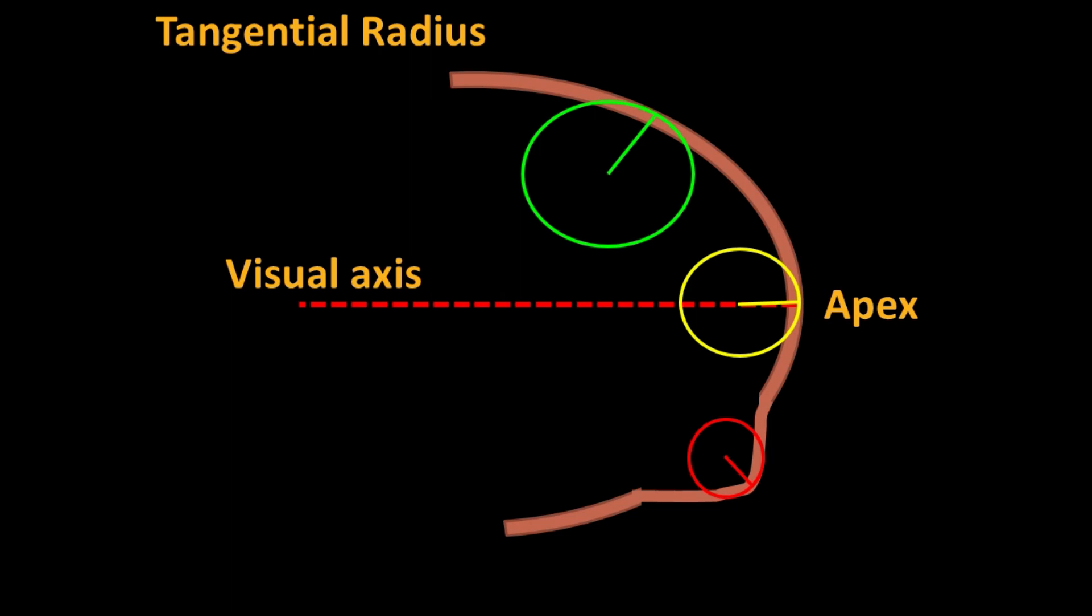Tangential radius is of greater accuracy in the peripheral cornea and is a better representation of local irregularities.